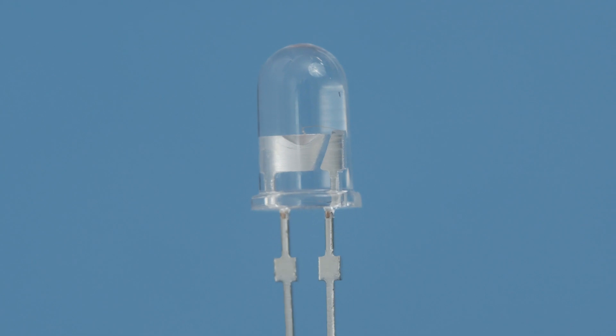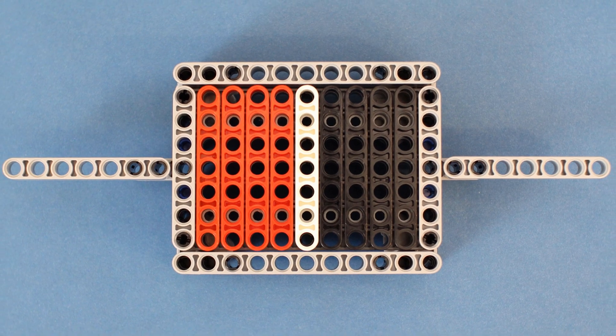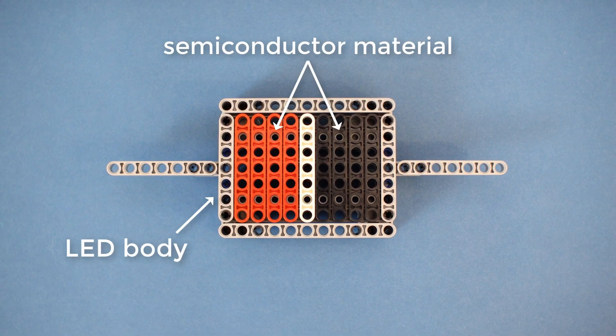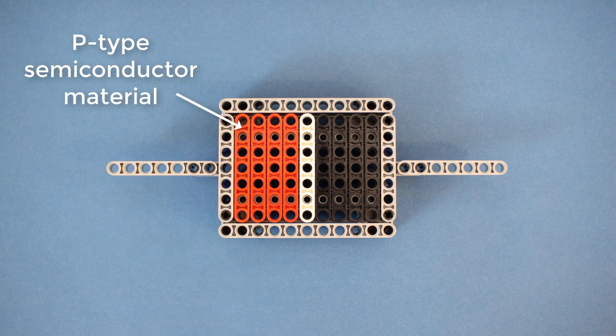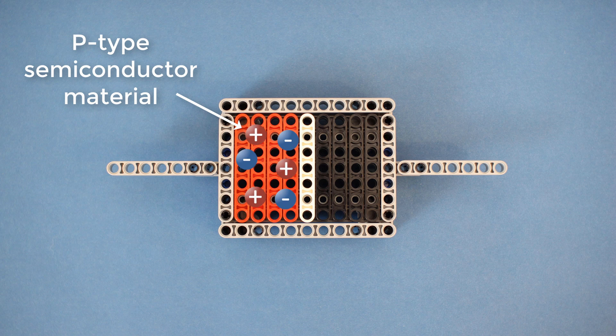Let's zoom way in on an LED. You'll see a tiny piece of semiconductor material surrounded by the LED body. One part of this semiconductor is known as P-type semiconductor material, which allows positive electric charges to move around more freely than negative charges.